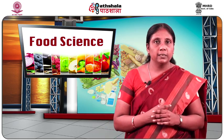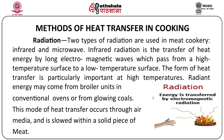The third method of heat transfer is radiation. Two types of radiations are used in meat cookery: infrared and microwaves. Infrared radiation is the transfer of heat energy by long electromagnetic waves which pass from a high temperature surface to a low temperature surface. This form of heat transfer is particularly important at high temperatures. Radiant energy may come from broiler units in conventional ovens or from glowing coals. This method of heat transfer occurs through air media and is slowed down within a solid piece of meat.